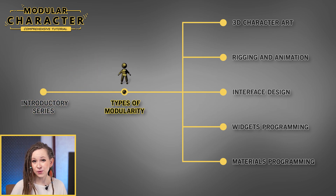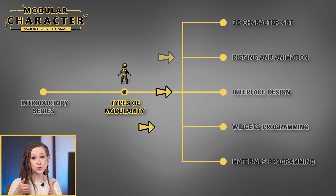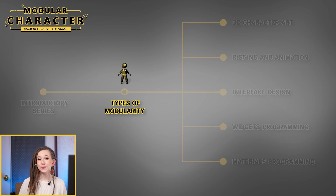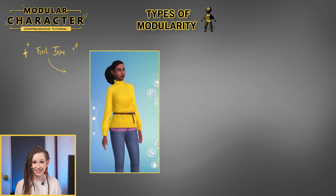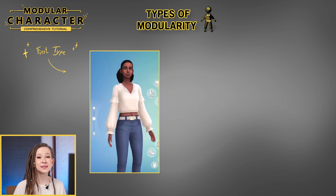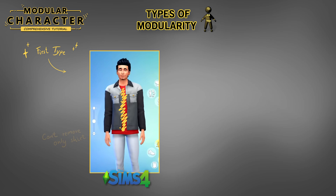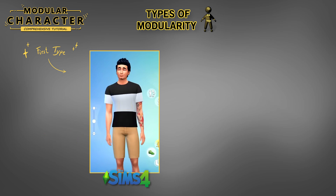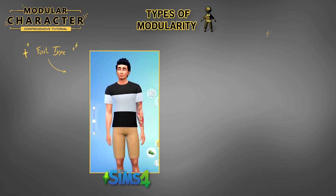I will explain my approach to character modularity without going into technical details and intricacies. Instead, we will break down the future project step by step. To begin with, I'd like to highlight two types of modularity implementation. Characters with fully replaceable pieces of clothing, like in The Sims 4 — the jacket and the undershirt are considered a single model, so when we replace this part of clothing, it changes entirely. It is impossible to only change the undershirt model or remove it and leave just the jacket.